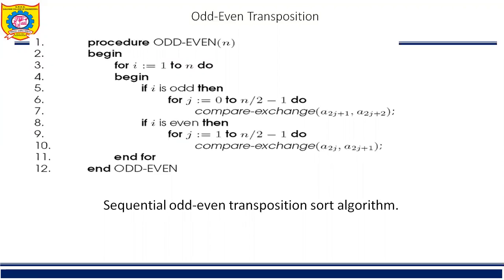Similarly, during the even phase, elements with even indices are compared with their right neighbors, and if they are out of sequence, they are exchanged. Thus the pairs (A2,A3), (A4,A5), ..., (An-2,An-1) are compared and exchanged. After N phases of odd-even exchange, the sequence is sorted. Each phase of the algorithm, either odd or even, requires O(N) comparisons, and there are a total of N phases. Thus the sequential complexity is O(N²).